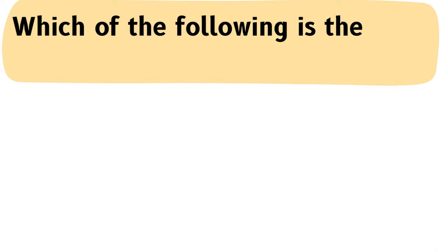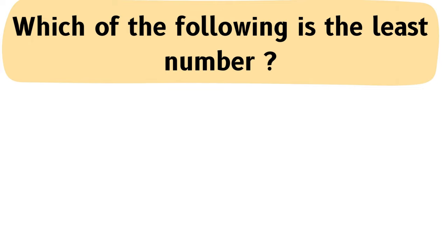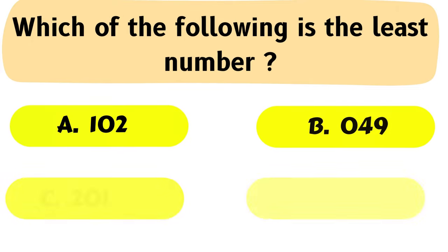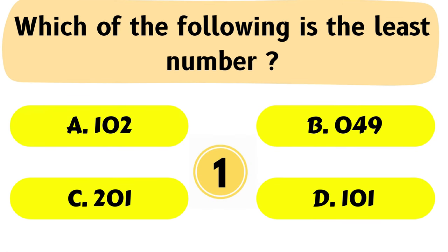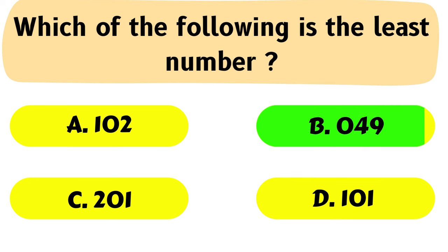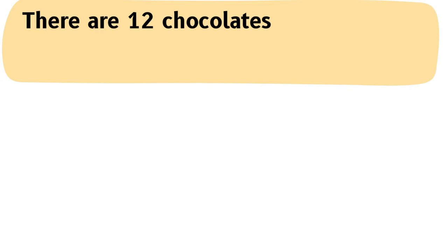Question No. 23: Which of the following is the least number? A. 102, B. 049, C. 201, D. 101. The correct answer is Option B: 049.